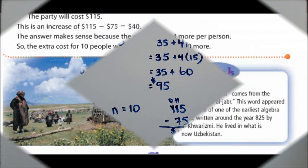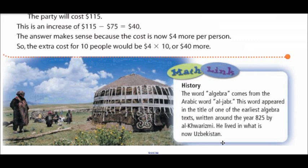We have a little bit of a math link here, and I think it's an interesting piece of information. It talks about where did the word algebra come from. It actually comes from an Arabic word, algebra. This word appeared in the title of one of the earliest algebra textbooks that was ever written in the year 825. It was written by a gentleman who lived in Uzbekistan, which is in the Middle East, around Iran and India. That area is actually where this word comes from. I think it's kind of a neat piece of information.